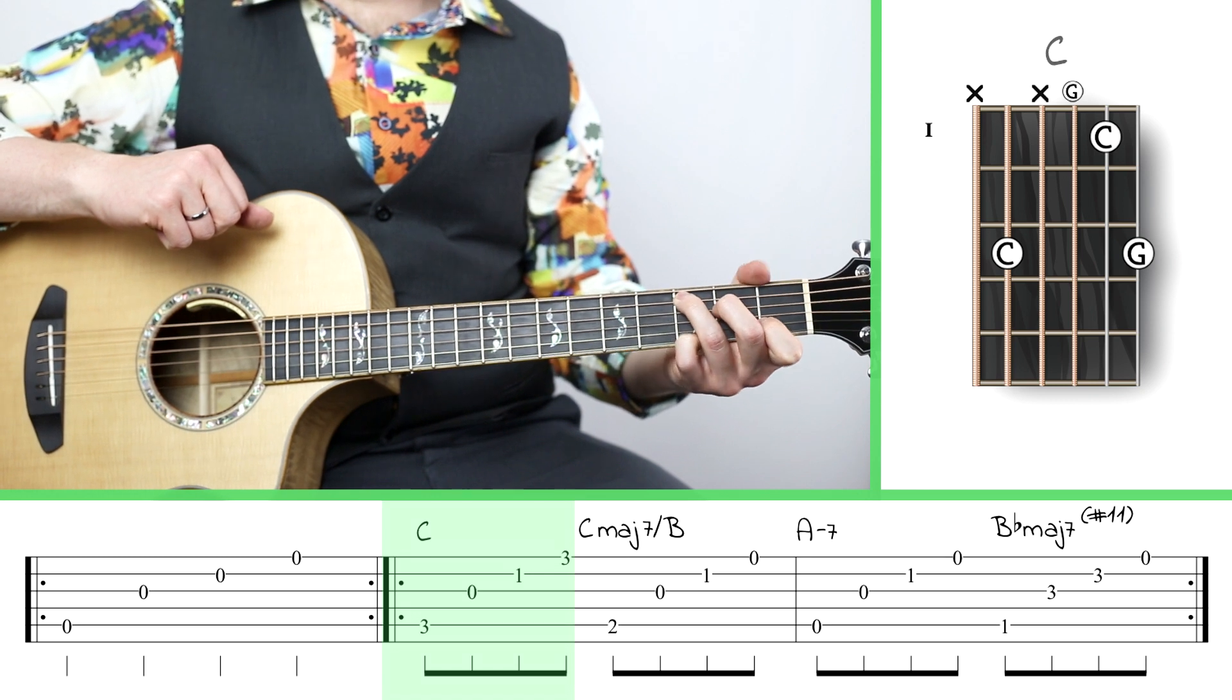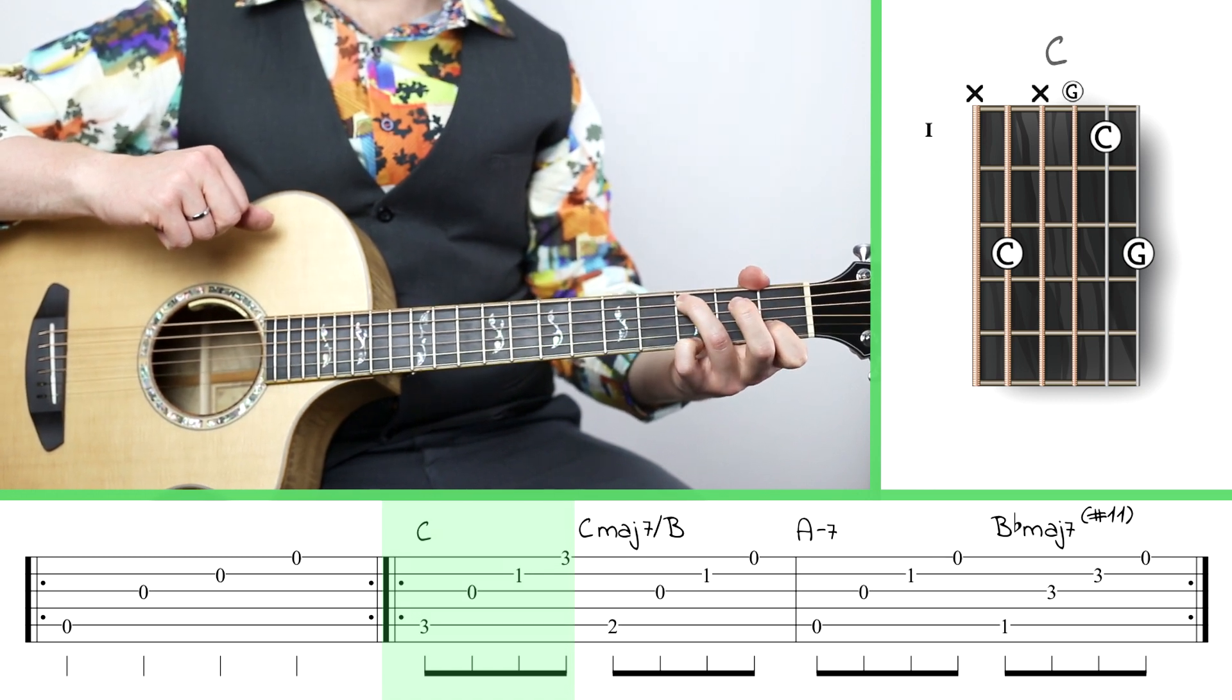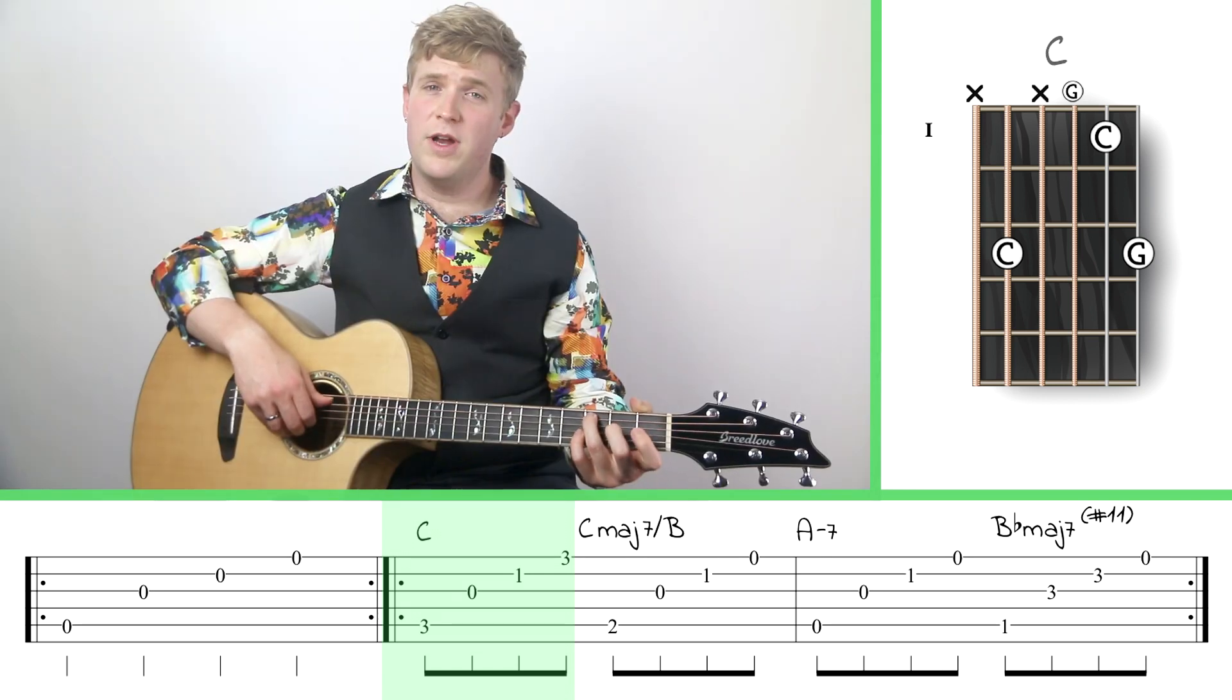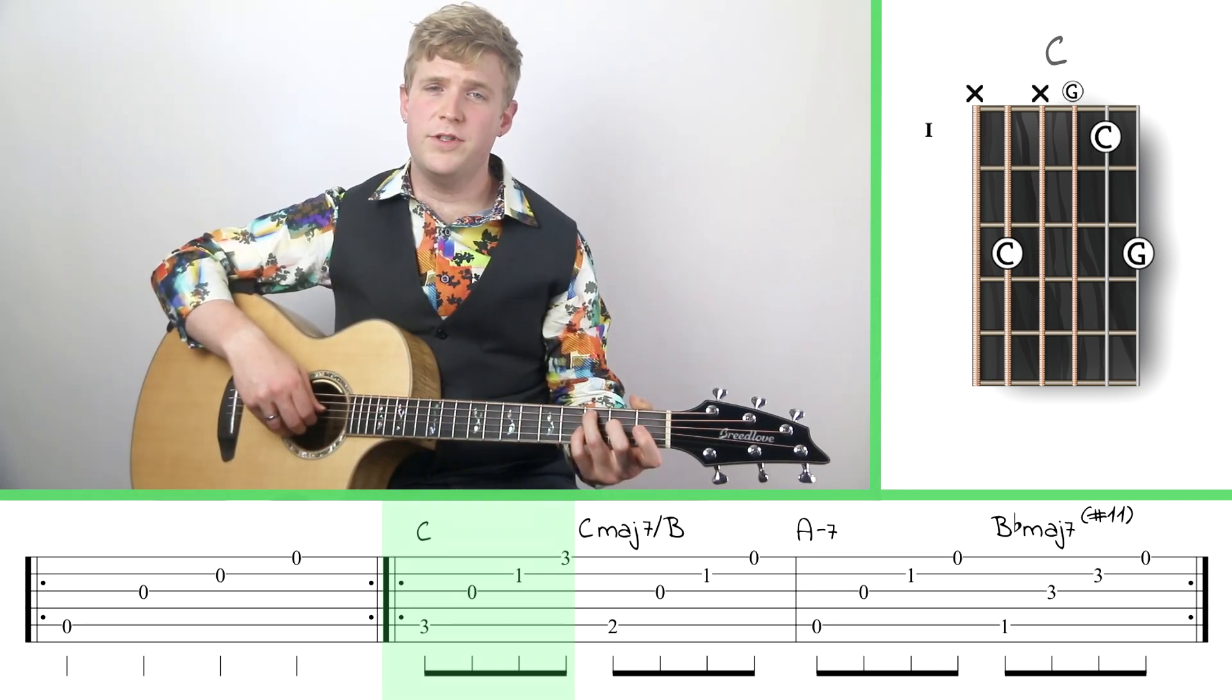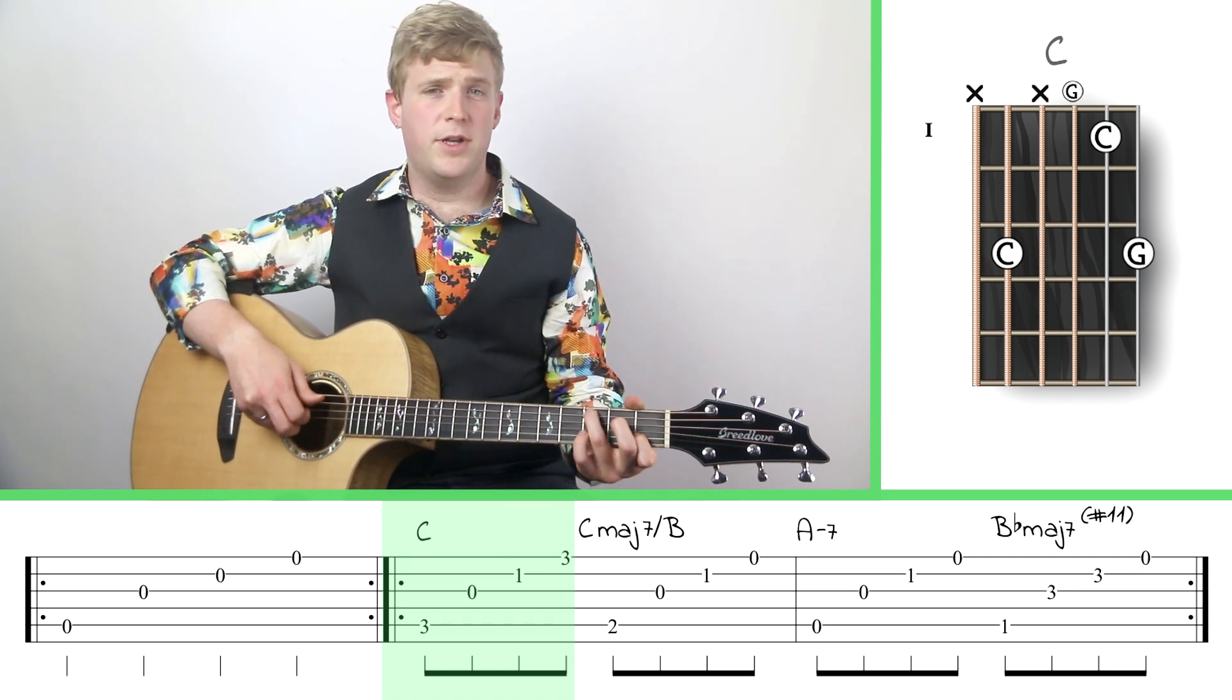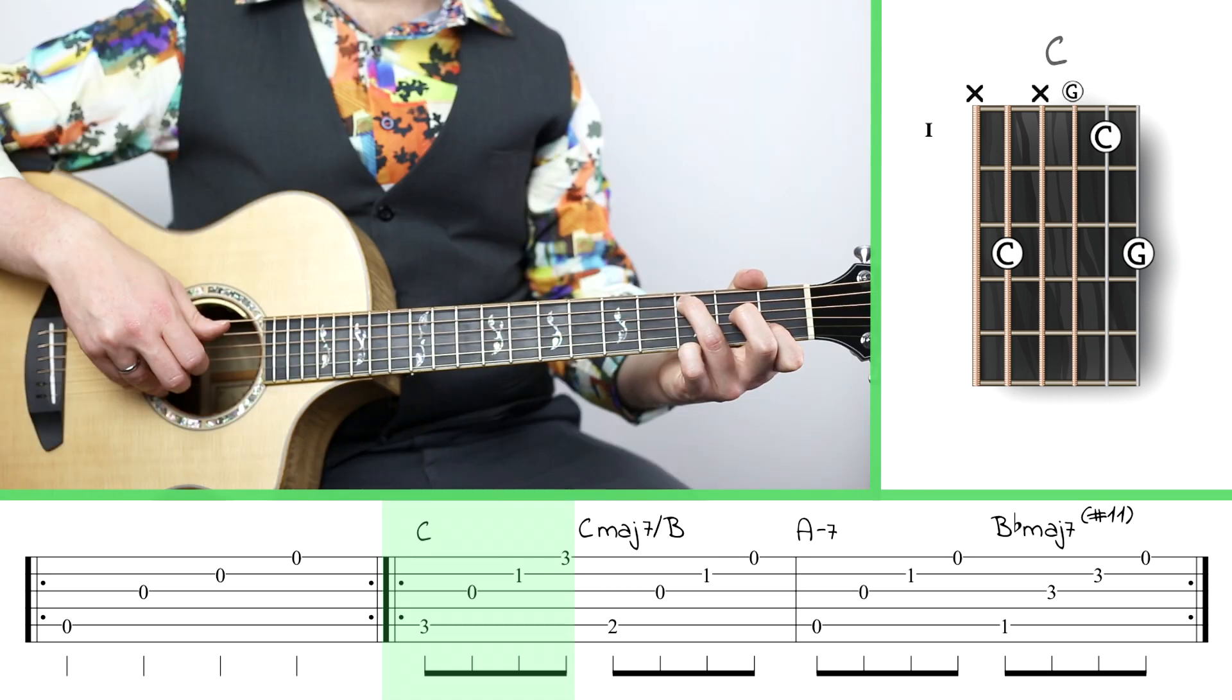And of course, since I'm not playing the note on the fourth string, I can just lift up that finger and skip it entirely, or you can leave it down, totally up to you. So I'm going to put my ring finger on the third fret of the fifth string, nothing on the fourth string, open third string, and then I'm going to put my index finger on the first fret of the second string.